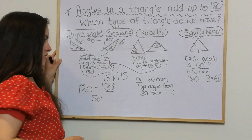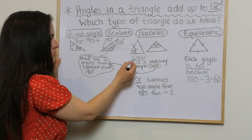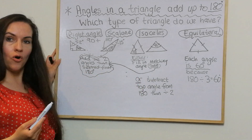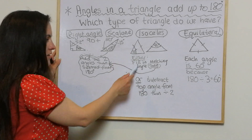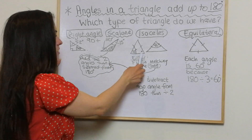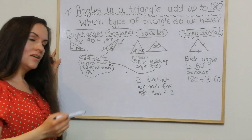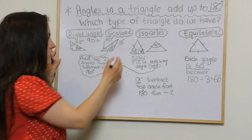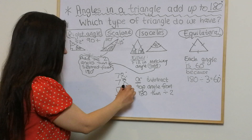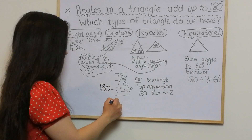The isosceles triangle is probably the most difficult one. For this example, we have to fill in the matching angle first. Because these two sides are the same, these two angles are the same, so I can fill in the matching angle — that's also going to be 78. Then I do 78 add 78, which gives me 156 degrees.